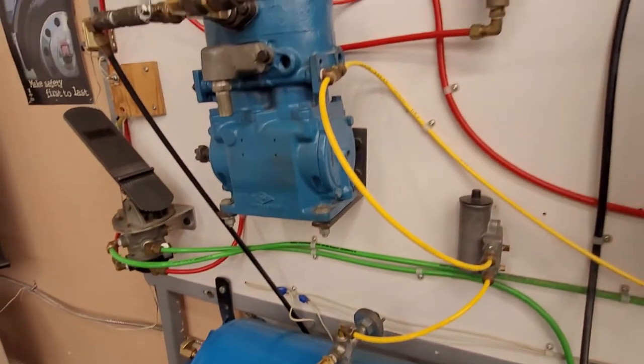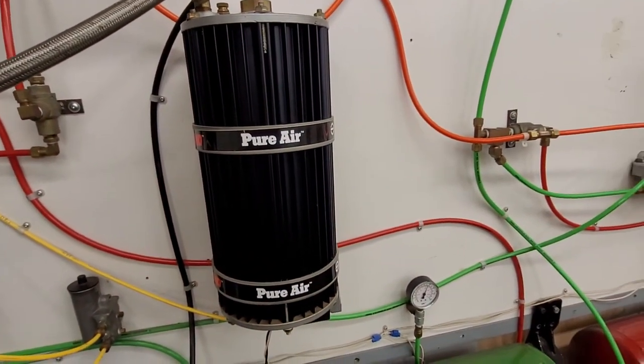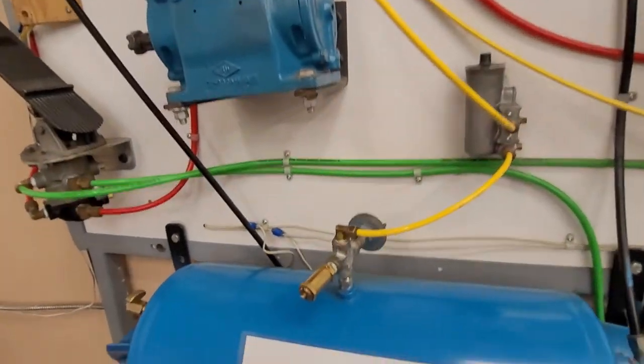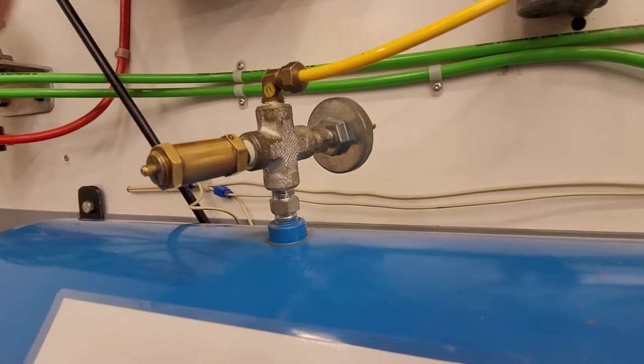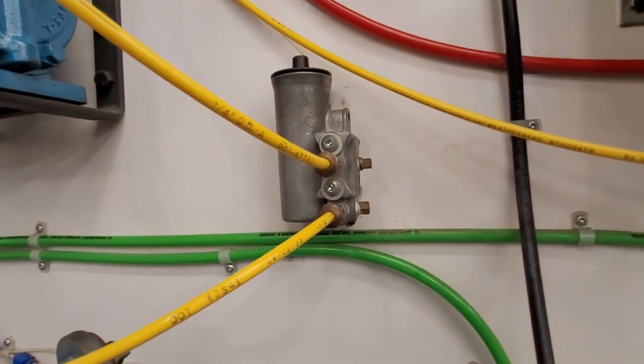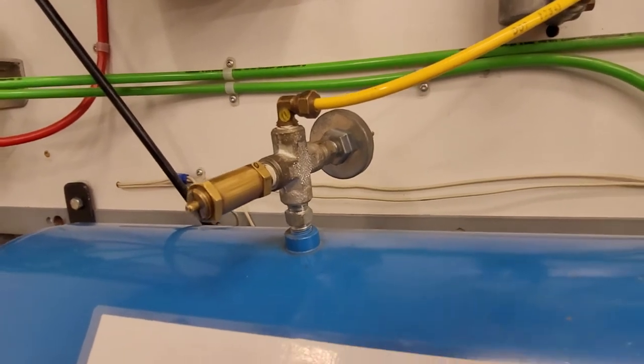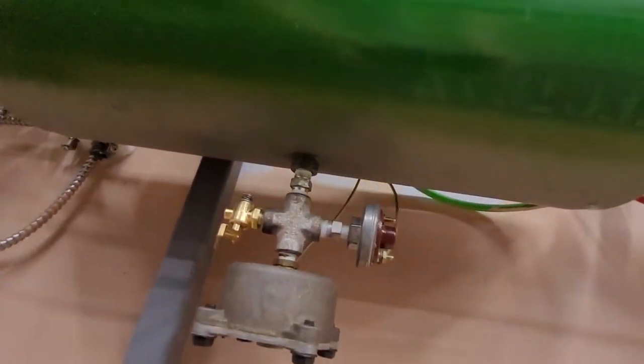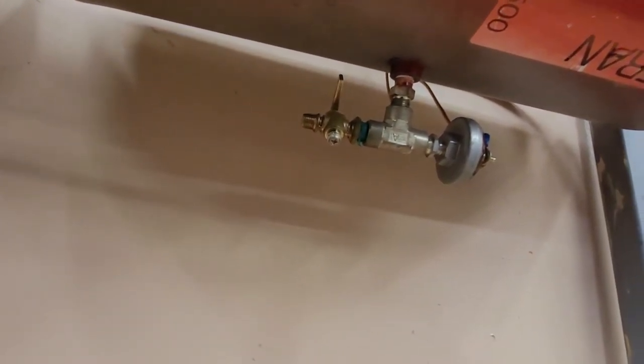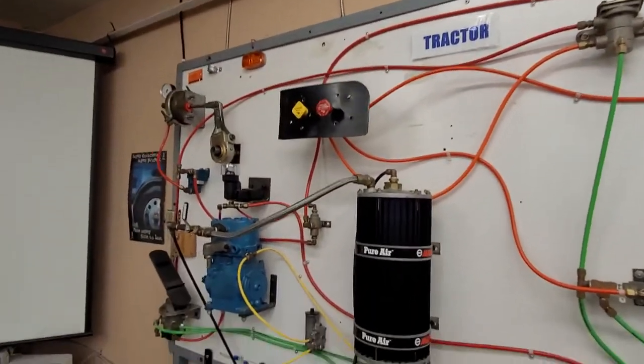So we have compressor, governor, and air dryer. Next component in the supply circuit is our safety valve. This valve is set to go off at 150 psi and it's a fail safe in case the governor fails. The pressure in the system won't reach over 150 psi. On the bottom of our service tanks we have drain valves on our primary, secondary, and supply tank. Those are the components that make up the supply circuit.